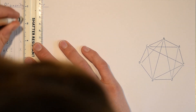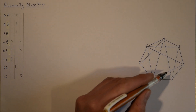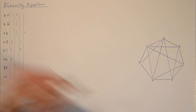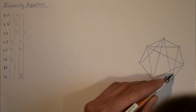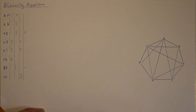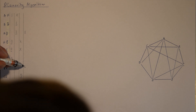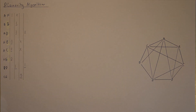Now we look at the edges which cross CE, which are AD and BD — both already labelled. The only unlabelled crossing edge was BD, but it is already labelled. So all of the edges have now been labelled, and because we reached the stage where all of them are labelled, we can say that the graph is planar.